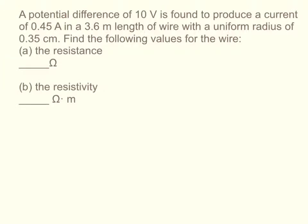A potential difference of 10 volts is found to produce a current of 0.45 amps in a 3.6 meter length of wire with a uniform radius of 0.35 centimeters. Find the following values of the wire.